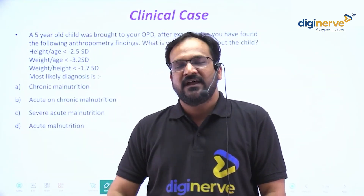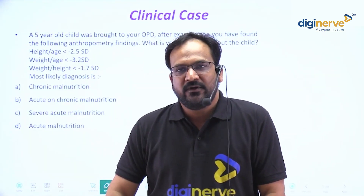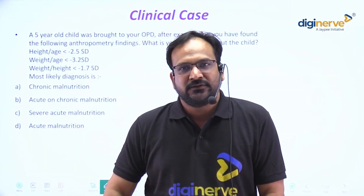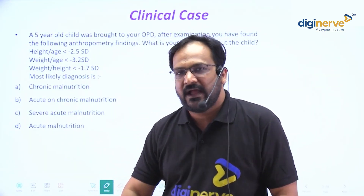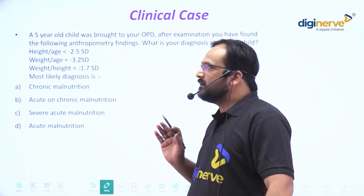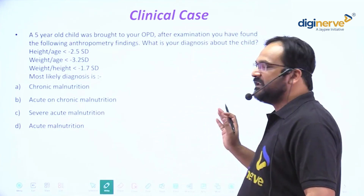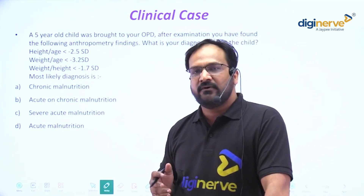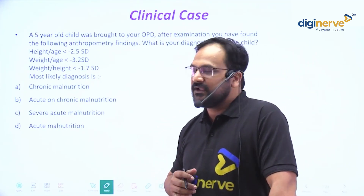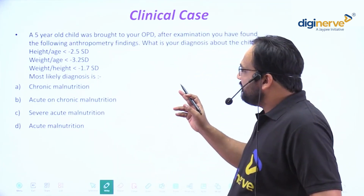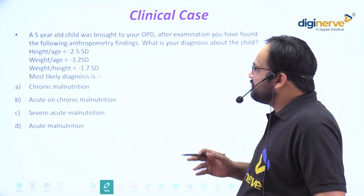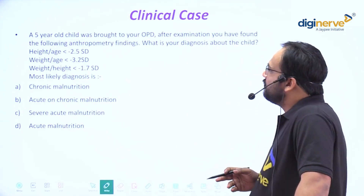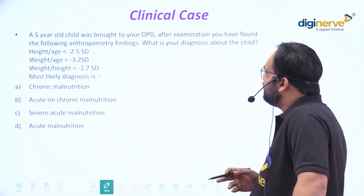Hello students, I am your community medicine faculty at DZNRV. Here I am with a clinical case scenario related to our subject. In the question, they have given: a five-year-old child was brought to your OPD, and after examination you have found the following anthropometric findings. What is your diagnosis about the child?